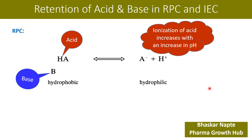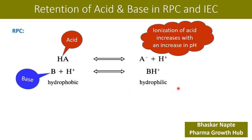Now let's say you have a basic molecule with formula B. If B is in a non-ionic form, it is hydrophobic in nature. The moment B gets protonated — accepting H⁺ — it becomes BH⁺, which is the ionized form of the base, and this ionized form is hydrophilic in nature.